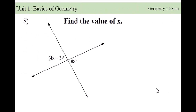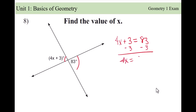Find x again. You need to figure out the relationship between these angles. These are vertical angles — the bow-tie or X shape — so they're equal to each other. So 4x plus 3 equals 83. Subtract 3 from both sides: 4x equals 80. Divide both sides by 4: x equals 20.